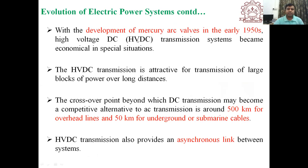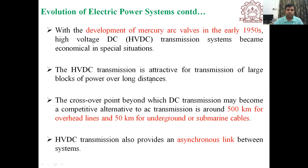In 1950, there was the development of the mercury arc valve. With this development, there was again a debate about whether to use HVDC or HVAC. The mercury arc valve made it very easy to convert from AC to DC and DC to AC using converters. From an economical point of view, if there is a need to transmit a bulk amount of power over long distances, it is better to use HVDC compared to HVAC.